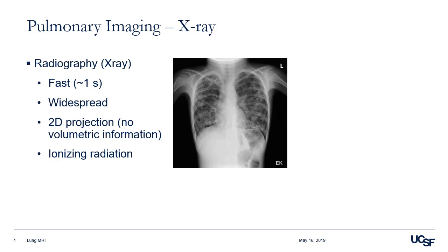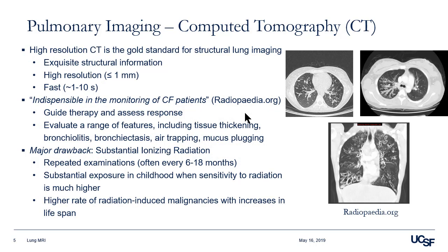Of course, we have projection X-ray — very fast, very widespread — but the main disadvantage is it's just a 2D projection. When we look at lung MRI, we'll have the advantage of 3D and applications where volumetric coverage is important. The standard for pulmonary imaging is CT, which has advantages of speed and resolution and is really the standard of care for most pulmonary imaging.